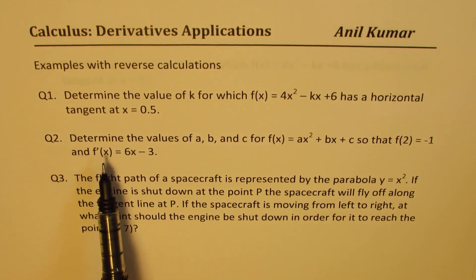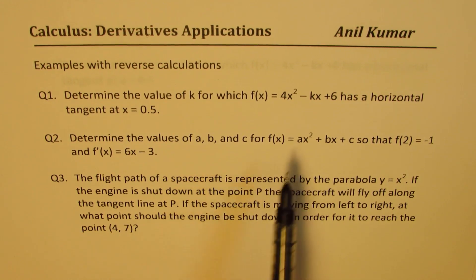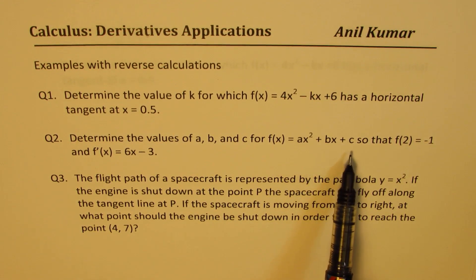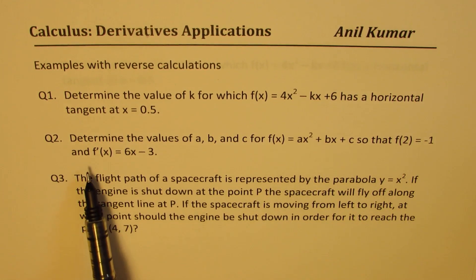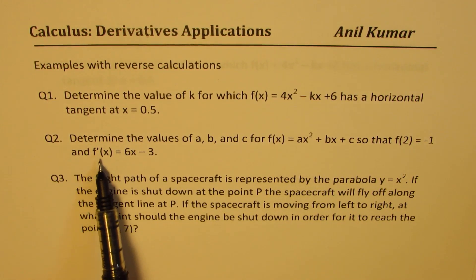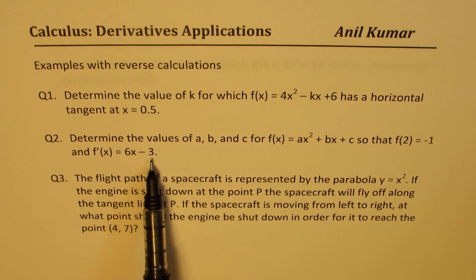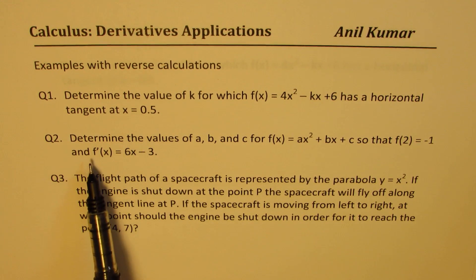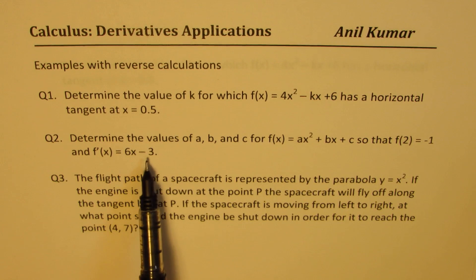Question number two: determine the value of a, b, and c for f of x equals ax squared plus bx plus c, so that f of 2 is minus 1, and the derivative f'(x) is 6x minus 3. So the derivative as a function is 6x minus 3.